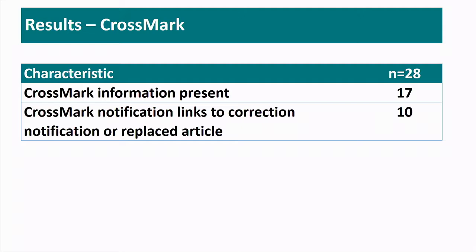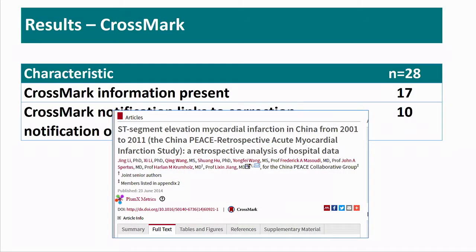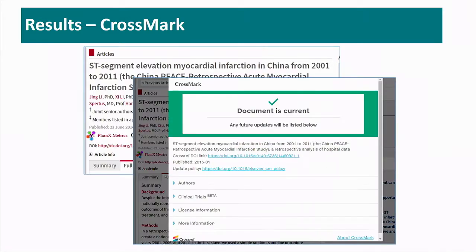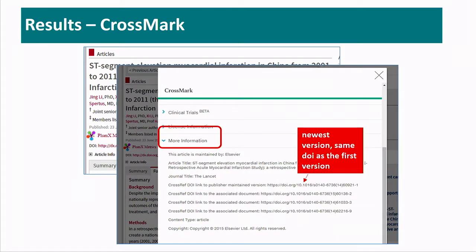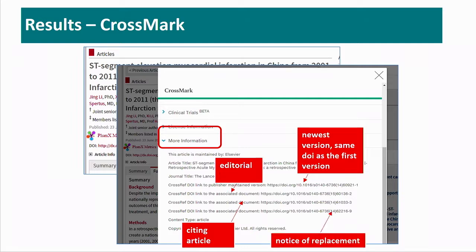When we looked at CrossMark information, we found it in 17 of them, and in 10 of them this CrossMark notification linked to the correction notification or replaced article. It was really a frustration that when you open a CrossMark tag, you don't see easily what has happened with this article. For example, this is a study from the Lancet — when you click on the CrossMark icon, you just see 'document is current.' It doesn't say it's a revised or replaced version. You have to open the more information tag to see that there are other publications linked to it, and you have to copy each of these DOIs and look for them — it's a notice of replacement. So it's really not clear for the end user what's going on.